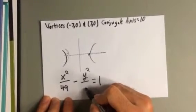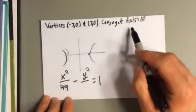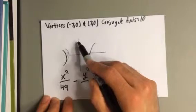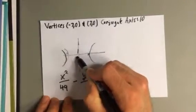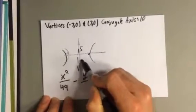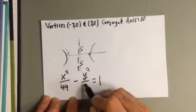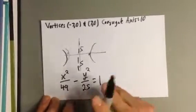The second denominator is the conjugate radius. Now they tell us the conjugate axis is 10. So you go 5 up and 5 down for that conjugate axis. 5 squared is 25. So underneath y squared, we would have 25.